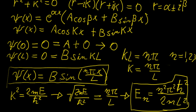The constant B is tricky to calculate because the boundary conditions don't help us solve for it. This constant B is actually called the normalization constant. To find it, we will need to use properties of continuous probability distributions, which we will cover in the next video.